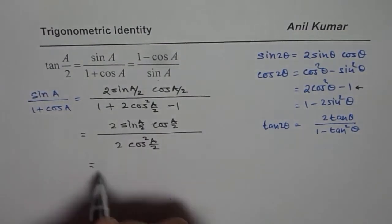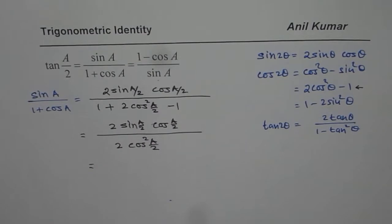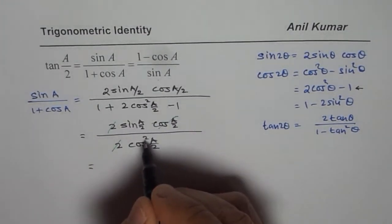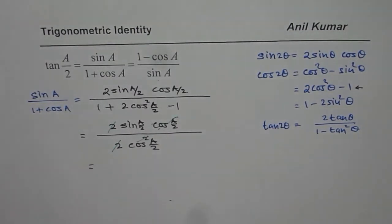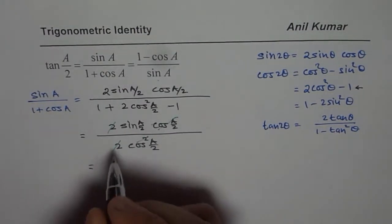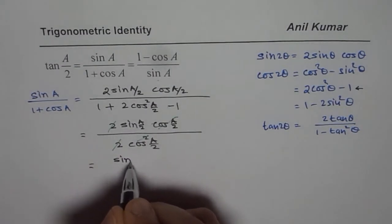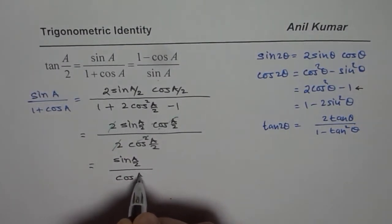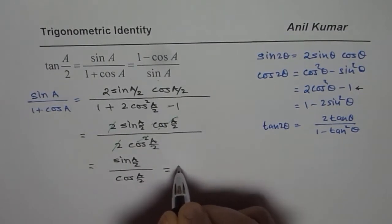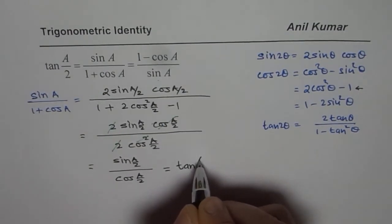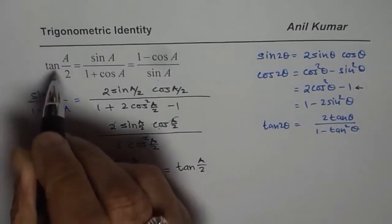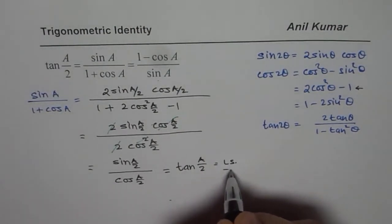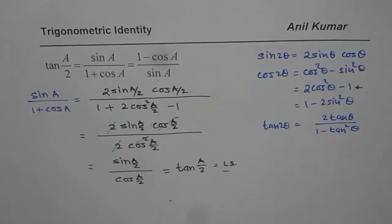Now we can further simplify: the 2 and 2 cancel, and one factor of cos(a/2) from cos squared(a/2) cancels with the cos(a/2) in the numerator. We are left with sine(a/2) divided by cos(a/2), which is indeed equal to tan(a/2). That is how you can prove this identity.